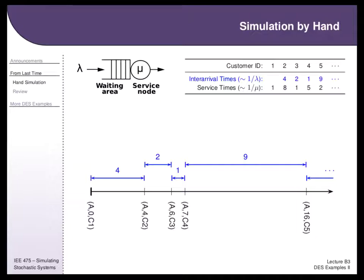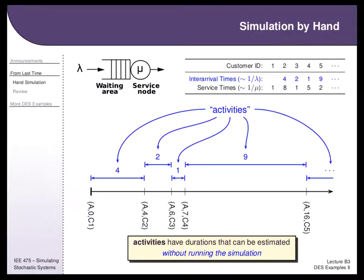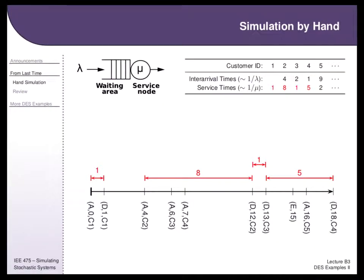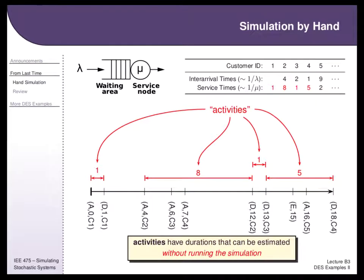We call them activities because these inter-arrival times were known before running the simulation — we can get a statistical distribution of inter-arrival times ahead of time. That's what makes them activities, or inputs to our model. Services are also activities: we know customer one will be in service for one time unit, customer two for eight, and so on, because we can look at the table ahead of time and figure out what these durations are going to be.